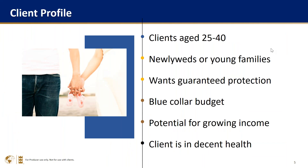Our client is young families — ages 25 to 40, maybe newlyweds. They want guarantees and they want protection. Millennials are some of the more financially conservative groups out there. They want guarantees in their life and they tend to be young individuals who are just starting out with big dreams and a lot of opportunity to move up. And they do need to be in decent health because — hint, hint — we're talking about life insurance here.